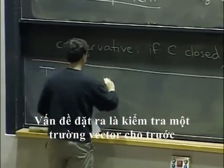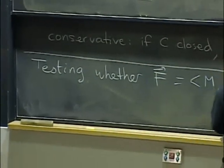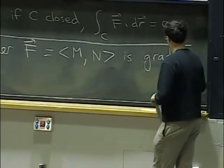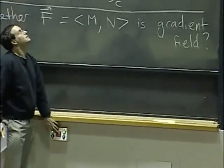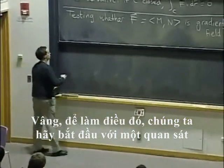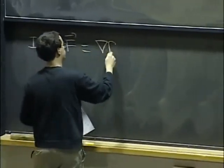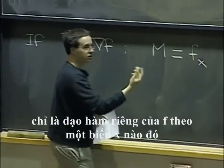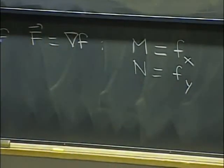So the question is testing whether a given vector field — let's say with M and N components — is a gradient field. For that, let's start with an observation. Say that it is a gradient field. That means that the first component of the field is just the partial of f with respect to x, and the second component is the partial of f with respect to y.